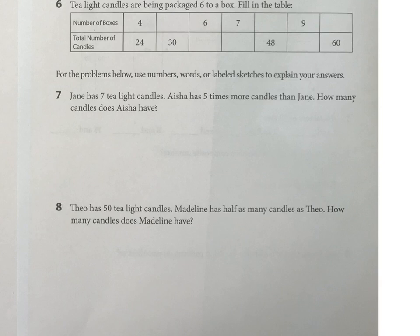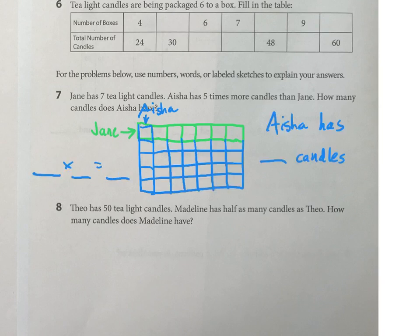So Jane has 7 tea light candles. I'll use a tile array to illustrate this. Aisha has five times more candles than Jane. Not five more candles, five times the candles. Just answer the question with a sentence and also be sure to show a number equation with your answer.